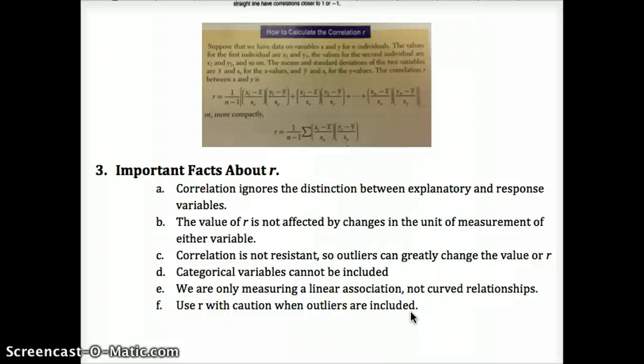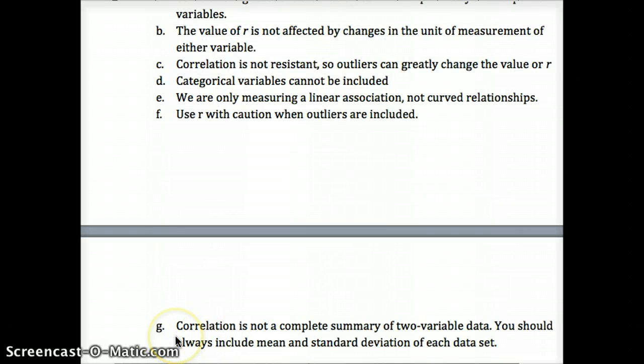We don't always just want to discount every outlier because outliers can also be important and give us important information. And finally, correlation is not a complete summary of two variable data. You should always include the mean and standard deviation of each data set to summarize where that data is.